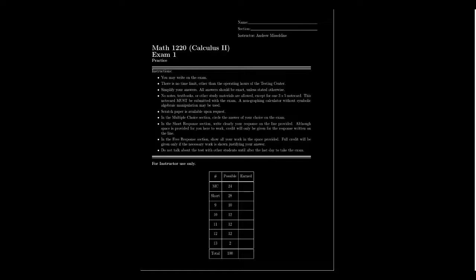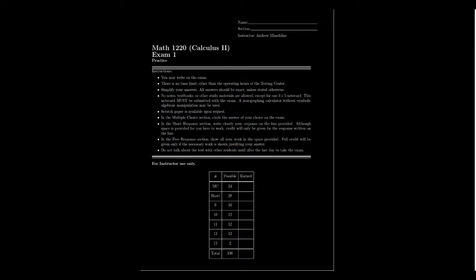What you see right in front of you is the cover page for this exam. It includes some instructions you should be familiar with. Our exams in this class will come with three different types of questions. The first section will be called the multiple choice section. As the name suggests, you'll be given a prompt and multiple choices to choose from. Among those choices, there's one and only one correct answer. To get full points, you select the single correct option on the page — no scantron needed. If you select a wrong answer, don't select any answer, or select multiple answers, you wouldn't get any points.